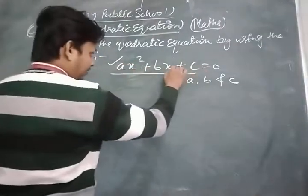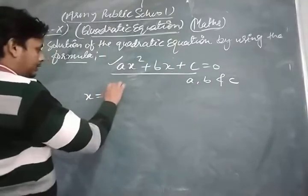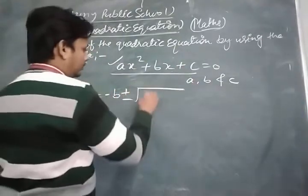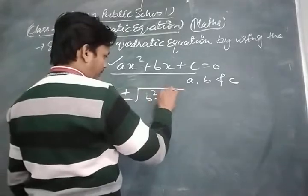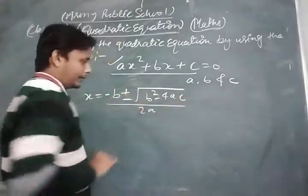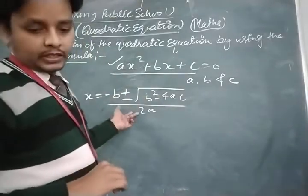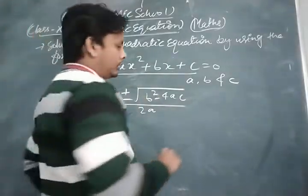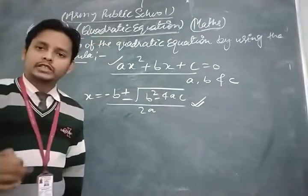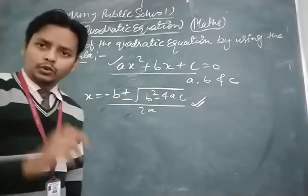This is the quadratic equation in x. There are two roots of the quadratic equation. The value of x is: minus b plus-or-minus the square root of (b² - 4ac), upon 2a. This is the quadratic formula, also known as the Sridharacharya rule.